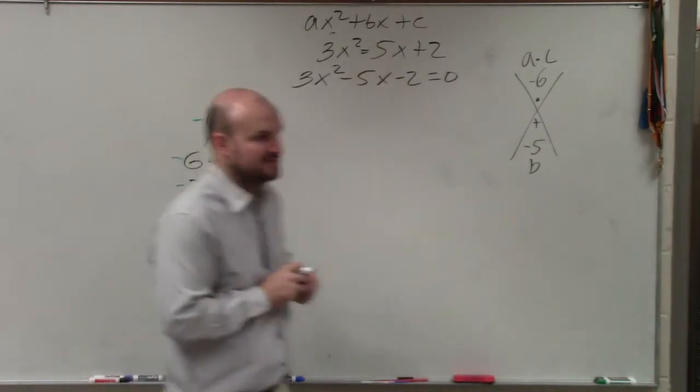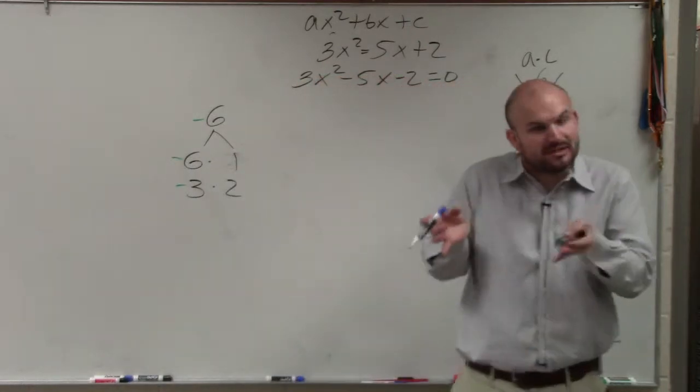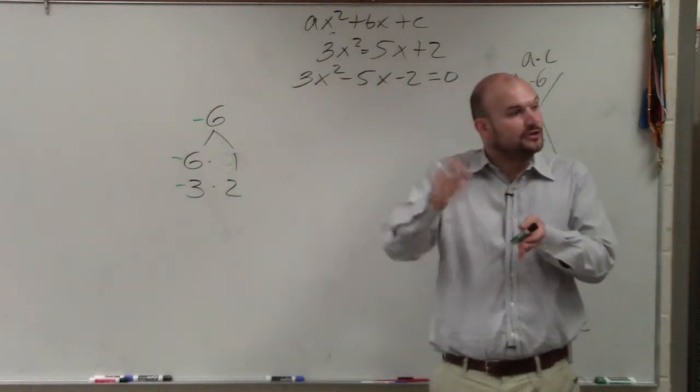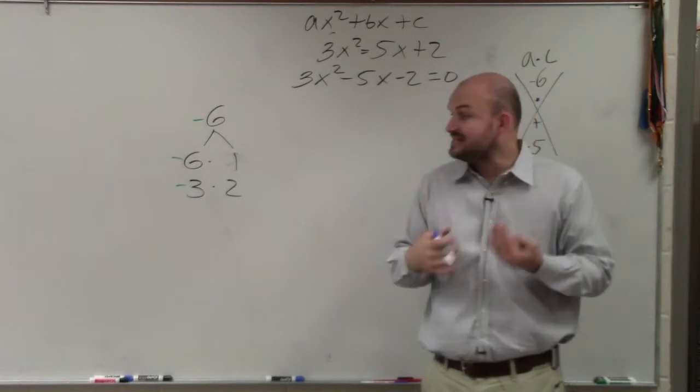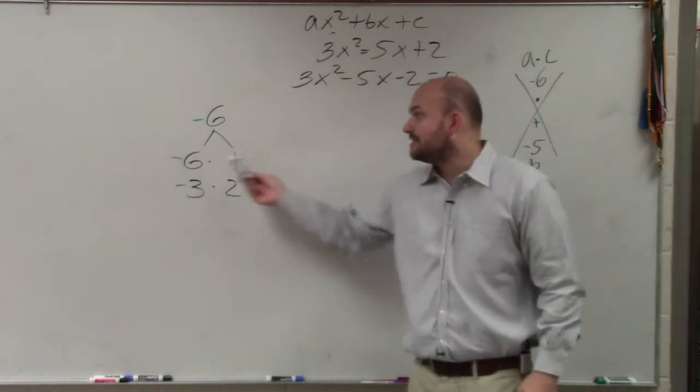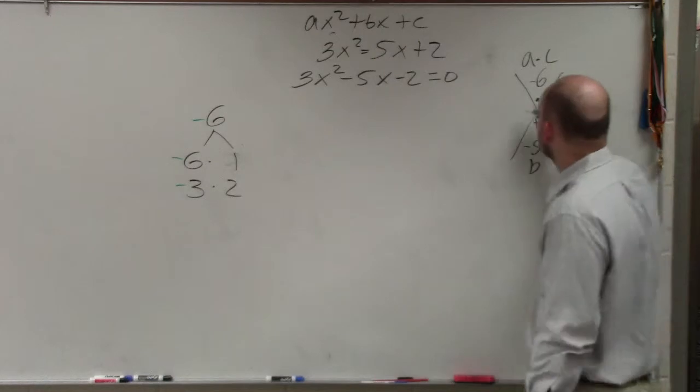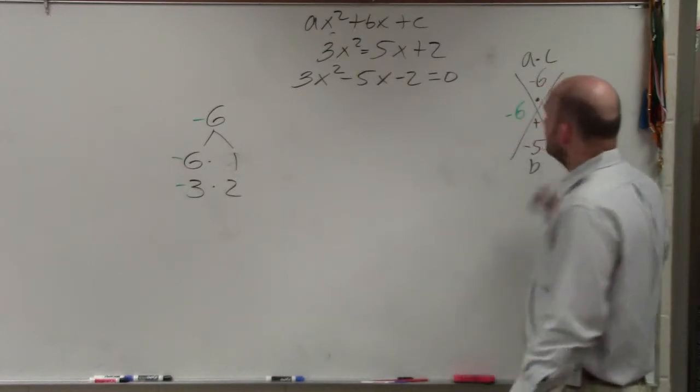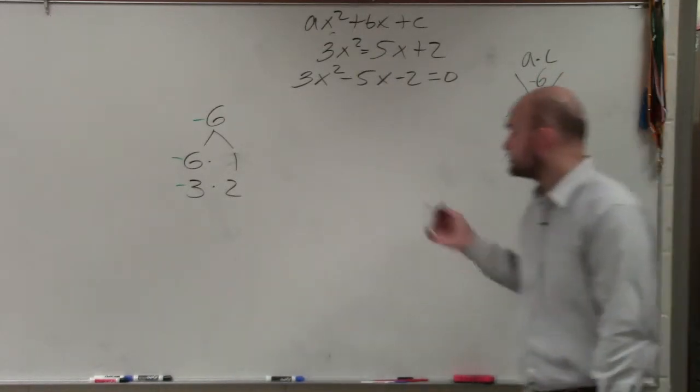So whenever I'm writing out my factors, especially for negatives, I look at what the middle term is. If it's positive, the larger factor has to be positive. If it's negative, that means the larger factor would have to be negative. And you guys can hopefully see that negative 6 and positive 1 are going to be your two factors.